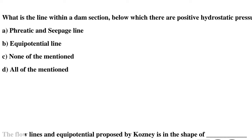Question 15: What is the line within a dam section below which there are positive hydrostatic pressures? Option A: phreatic and seepage line, Option B: equipotential line, Option C: none of the above, Option D: all of the above. The correct answer is Option A: phreatic and seepage line.